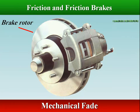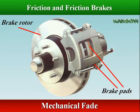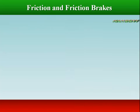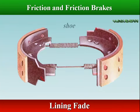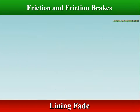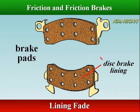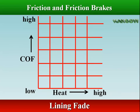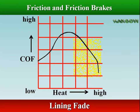Mechanical fade is not a problem with disc brakes, because as a brake rotor heats up it expands towards the brake pads rather than away from them. Lining fade affects both drum and disc brakes, and occurs when the friction material overheats to the point where the coefficient of friction drops off. Some heat increases the coefficient of friction, but too much heat can cause it to drop off sharply. When the coefficient of friction drops off, friction is reduced and the brake assembly's ability to convert additional heat is reduced.